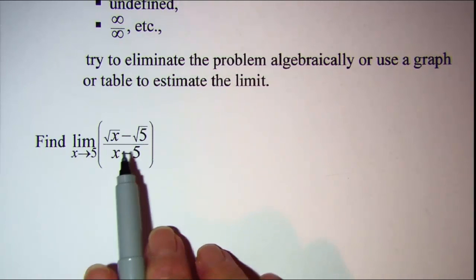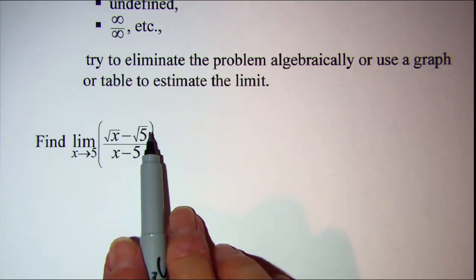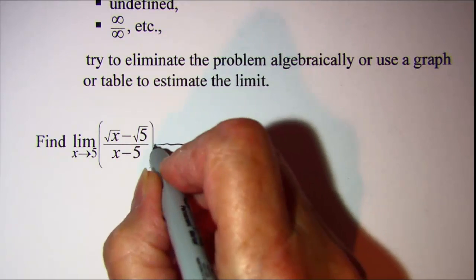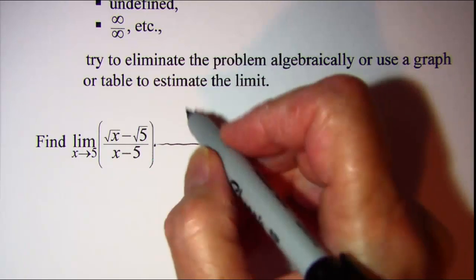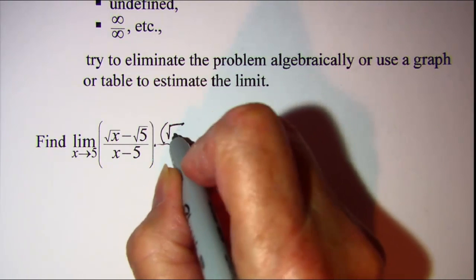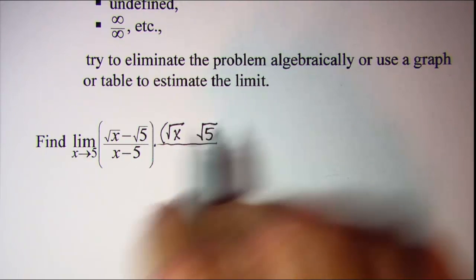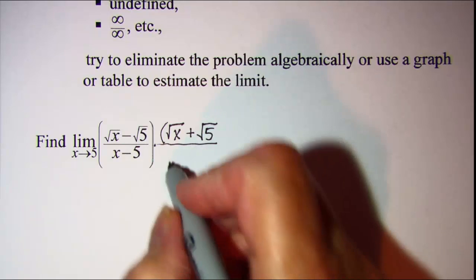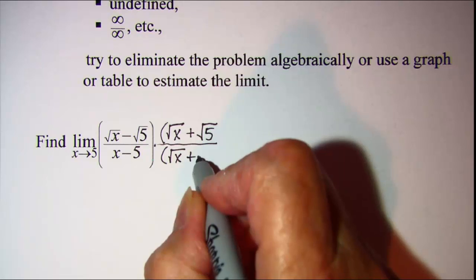With this type of problem, we would want to rationalize the numerator. And we do that by multiplying the top and the bottom of the fraction by the conjugate of this binomial. The conjugate, remember, is the same terms but with the opposite operation. So since this is a subtraction, we would use addition here. So multiply top and bottom by root x plus root 5.